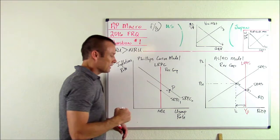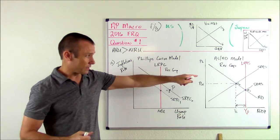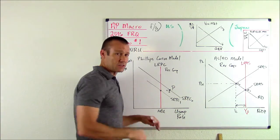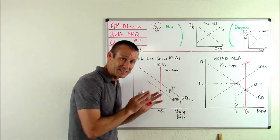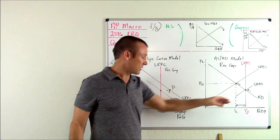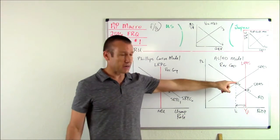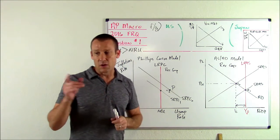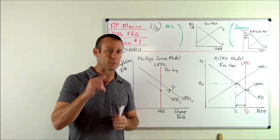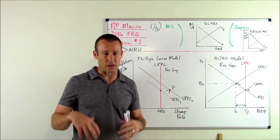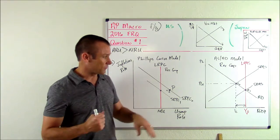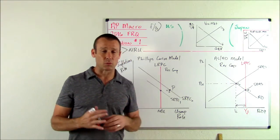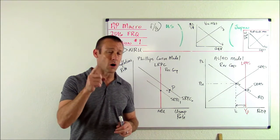The SRPC shifts from SRPC-sub-0 to SRPC-sub-1 to the left. When SRAS goes right, the SRPC goes left — and vice versa. Key point: when AD shifts in the AS-AD model, we move along the SRPC. When SRAS shifts in the AS-AD model, the SRPC shifts. The explanation centers on nominal wages: nominal wages go down, SRAS increases, unemployment falls, and there's downward pressure on the price level, causing the SRPC to shift left. Always talk about nominal wages for long-run explanations.